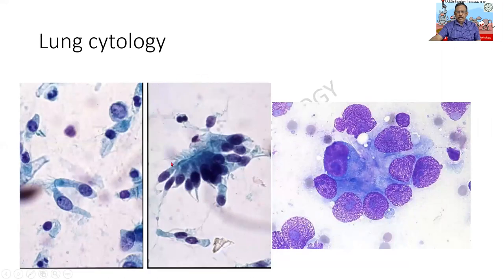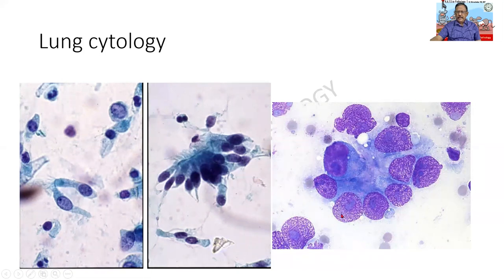This is again lung cytology. Normally, the lung is lined by ciliated columnar epithelium — I hope you can make out the cilia, which brush away fine particles that enter our lungs. But on the contrary, this is also from the lung: I find that the cells are large, I can see a large nucleolus, and they are arranged together in a glandular configuration, which means it is an adenocarcinoma. Increased nuclear-cytoplasmic ratio and glandular configuration — so this can be identified.